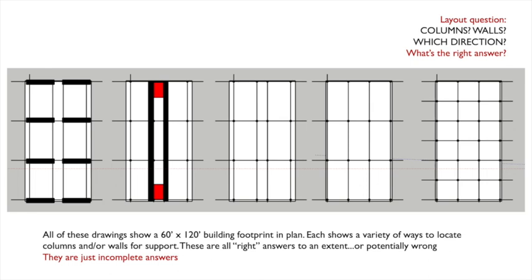Look, I know a lot of you are probably thinking to yourself, I don't want to make the wrong choice. How do I even start? Do I use columns? Do I use walls? Which direction do I put them in? What's the right answer for this? And so, again, I keep coming back to you. What do you think the right answer is?